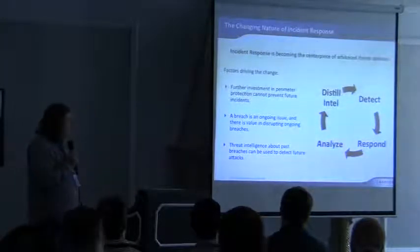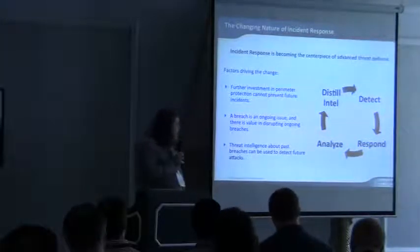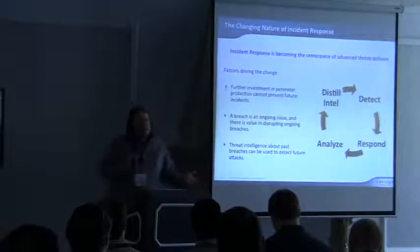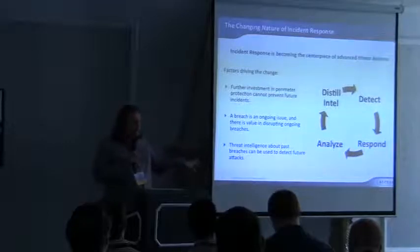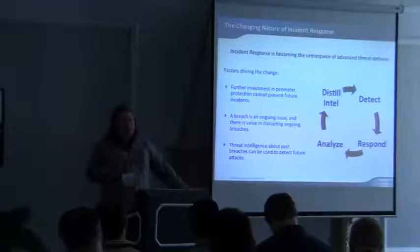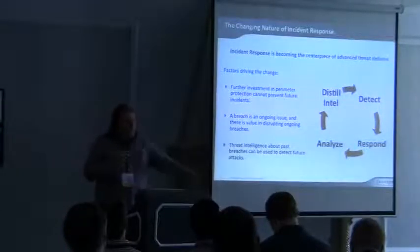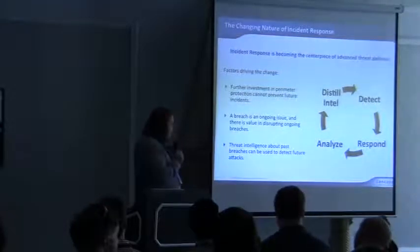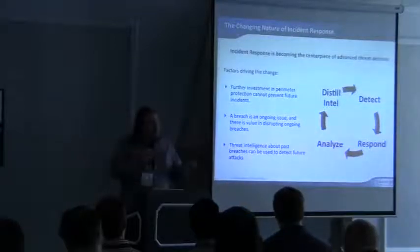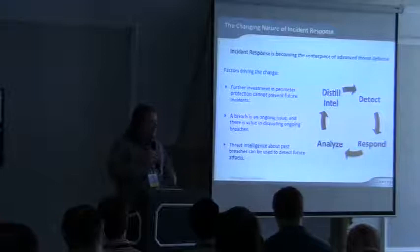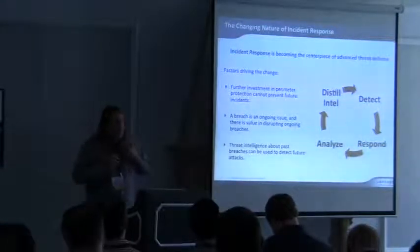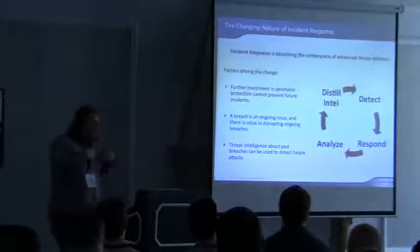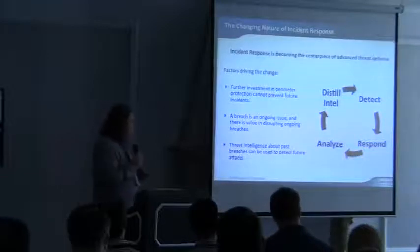This causes a shift toward incident response as part of how you protect your environment. Further investment in perimeter protection cannot prevent future incidents. When dealing with persistent attacks, these guys are in your network for the long haul — finding and disrupting them even after day one is still constructive. There's value in disrupting ongoing attacks. Threat intelligence from past breaches can detect future attacks. Doing incident response and investigation is actually how you protect your network from future incidents — the focus moves from prevention to incident response.